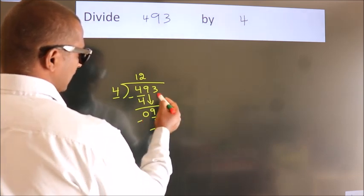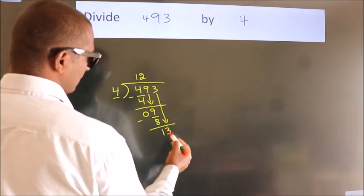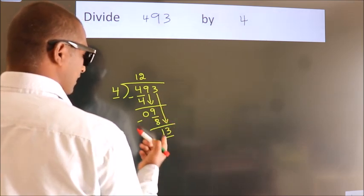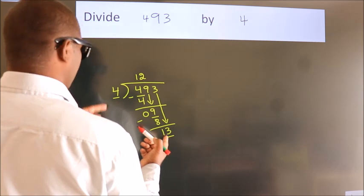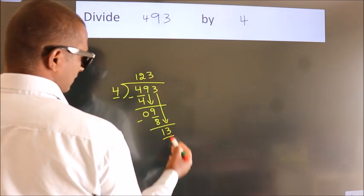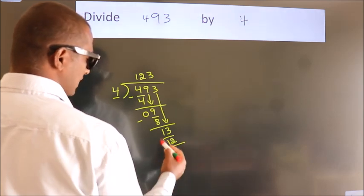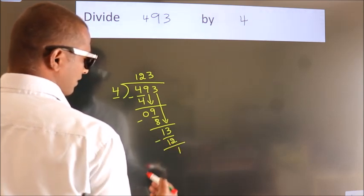After this, bring down the beside number. So, 3 down. So, 13. A number close to 13 in 4 table is 4, 3's, 12. Now, we subtract, we get 1.